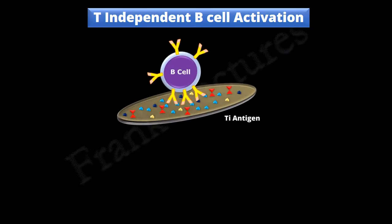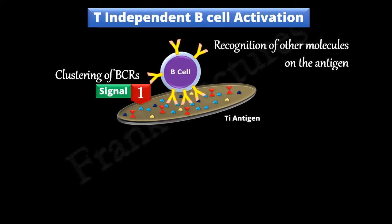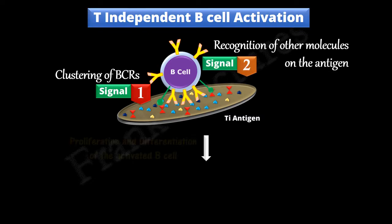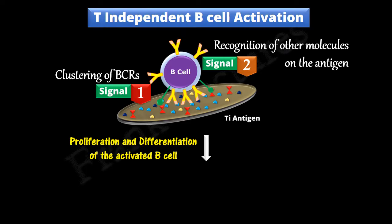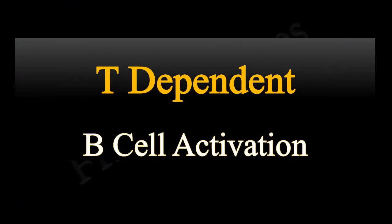In the previous video lecture, we studied in detail the T-independent B-cell activation. It is a two-signal process. The first signal is derived from the clustering of B-cell receptors on antigen recognition, and the second signal is derived from other molecules of the antigen. As a result of T-independent B-cell activation, mainly IgM antibodies are produced. Since memory B-cell production requires T-cell help, no memory cell production occurs. Let us now study T-dependent B-cell activation.